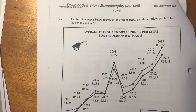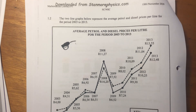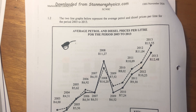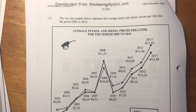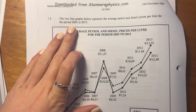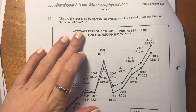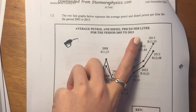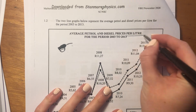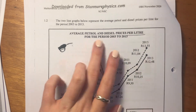Let's move on to 1.2. So in 1.2, it says the two line graphs below represent the average petrol and diesel prices per liter for the period 2003 to 2013. Average petrol and diesel price per liter — I'm saying it again — per liter for the period.